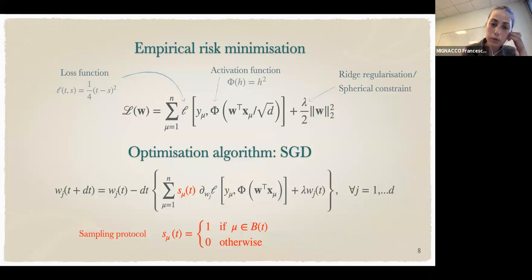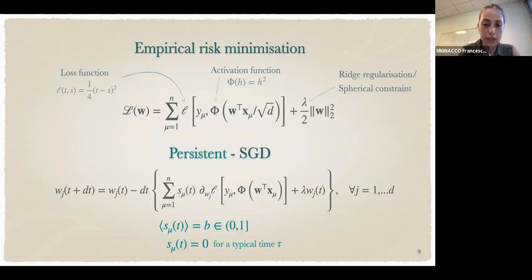In particular, for our analytic characterization, we choose a slight variant of the SGD algorithm we call persistent SGD. The difference is that in this case the process for the labels s_mu in the continuous time limit is a Poisson process. The average fraction of samples used to compute the gradient is fixed, but in general the mini-batch size can fluctuate. Also, the samples are used in the gradient for a typical time, so there is a notion of persistency in this sampling procedure that introduces a memory that normally is not there.